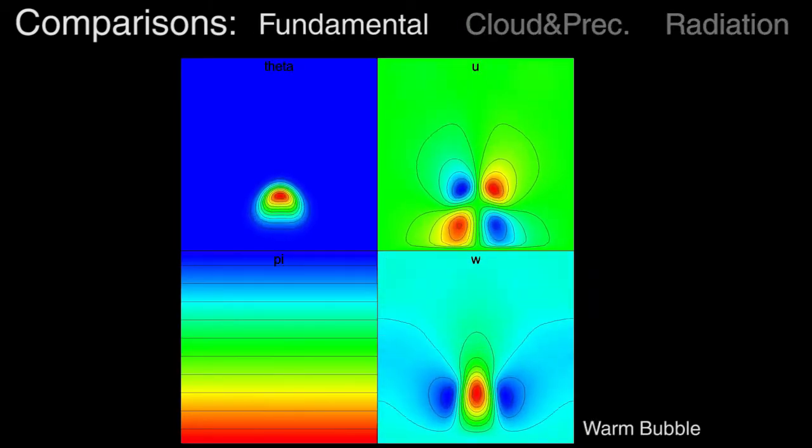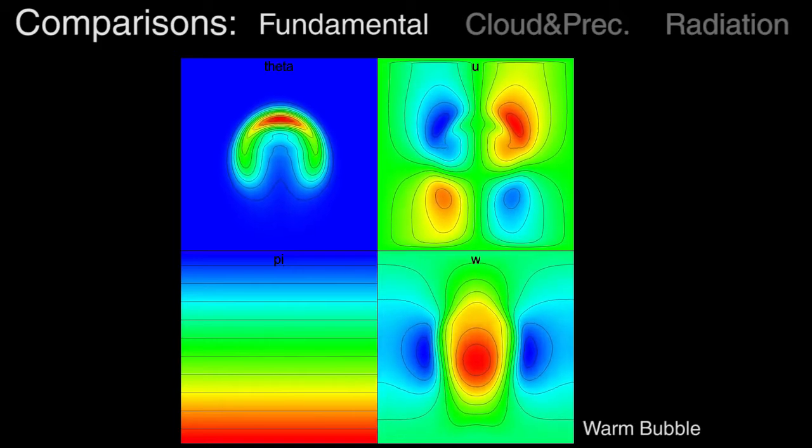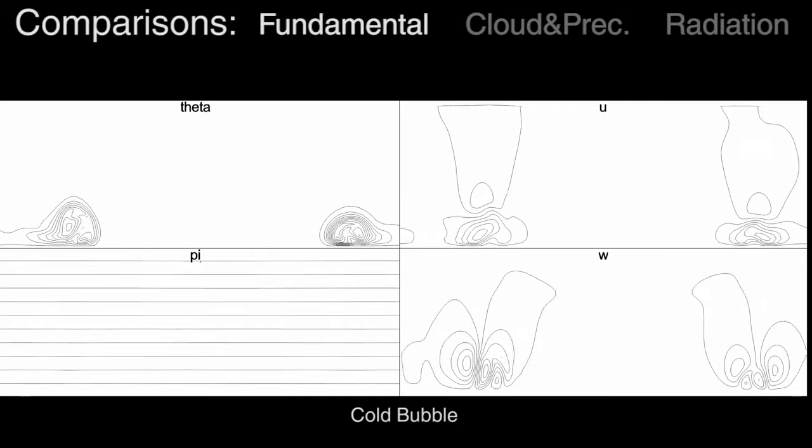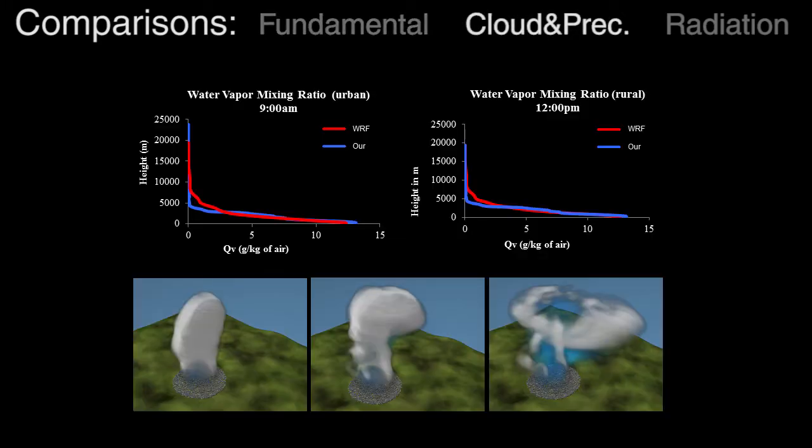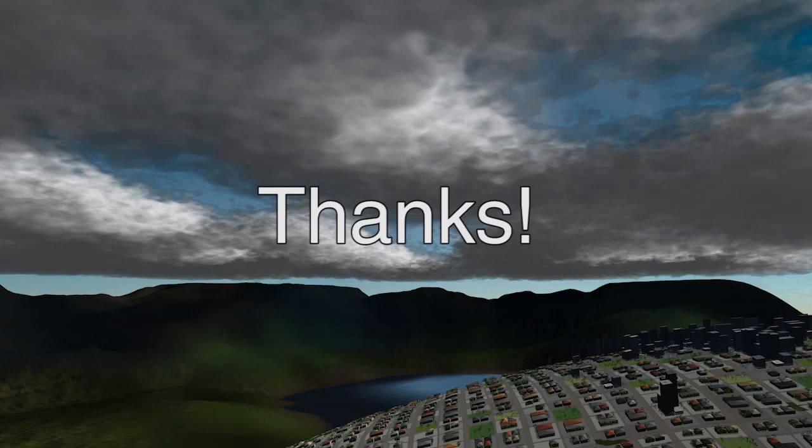To validate the first component of our weather simulator, we perform a comparison to the well-known benchmark of the warm bubble and cold bubble of air. Our results are very similar. We compare our second component, the cloud and precipitation model, to the well-known weather research and forecasting system. We produce similar water vapor values during the day for the same location. We also compare our third component, the radiation model, to the WRF system yielding similar urban heat island temperature evolution over time. For more details, we refer you to our paper.